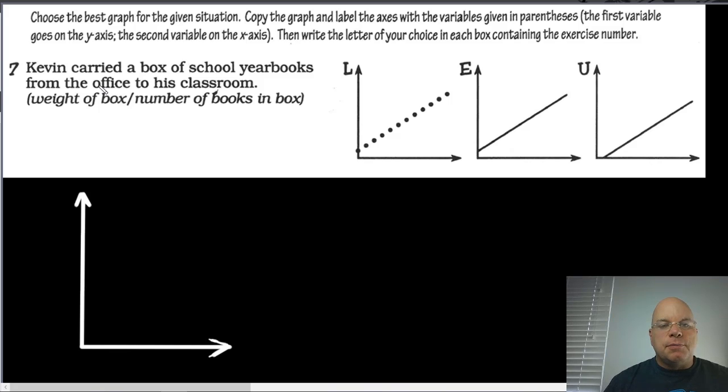The dependent variable, what does it say, the first variable goes on the y-axis, so the dependent variable is weight of the box, and then the independent variable is the number of books in the box.